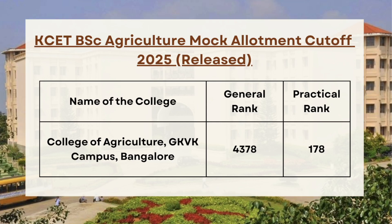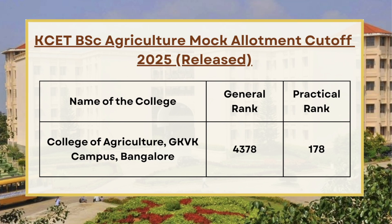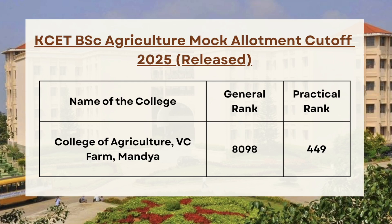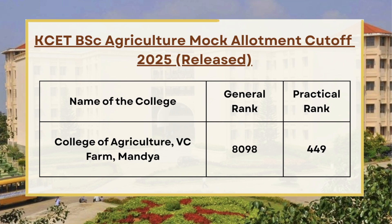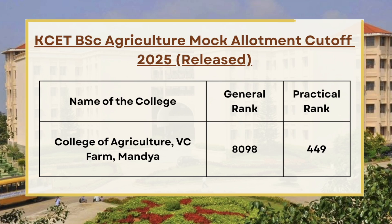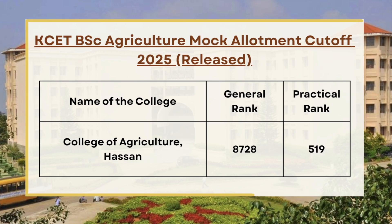For general category, the official cutoff rank for mock allotment is 4378 and for practical the cutoff is 178. Next in the list we have College of Agriculture Mandya, so for the general category the official cutoff rank for mock allotment is 8098 and for practical it is 449.